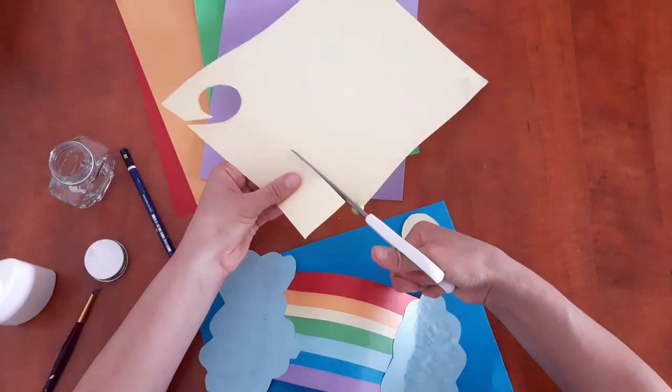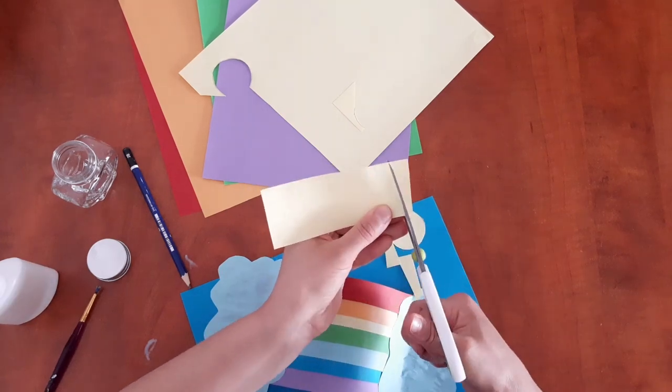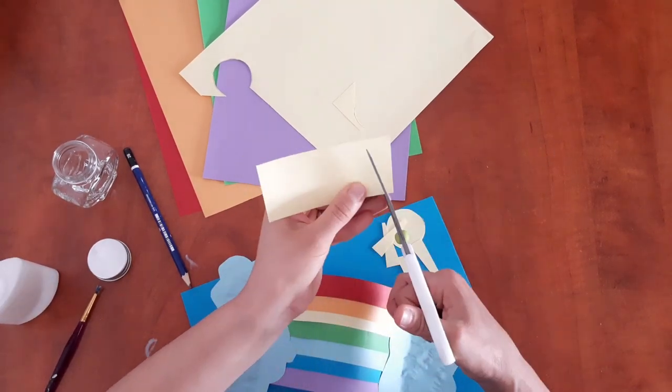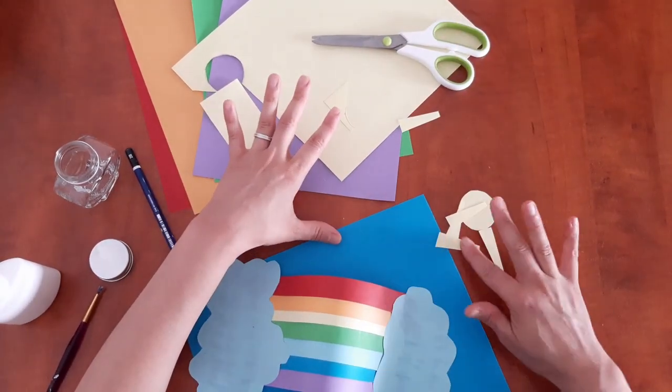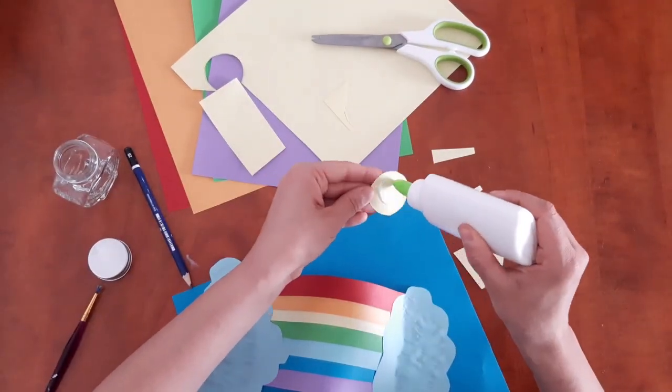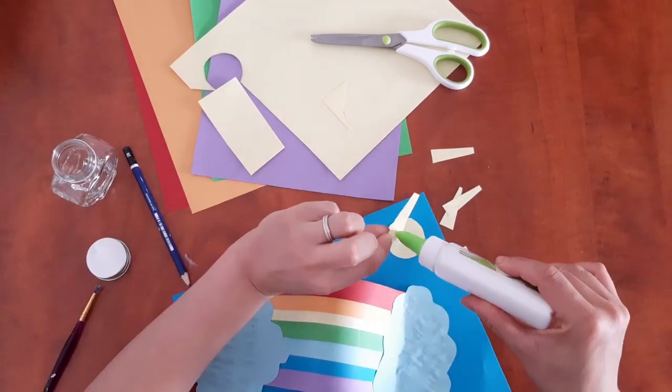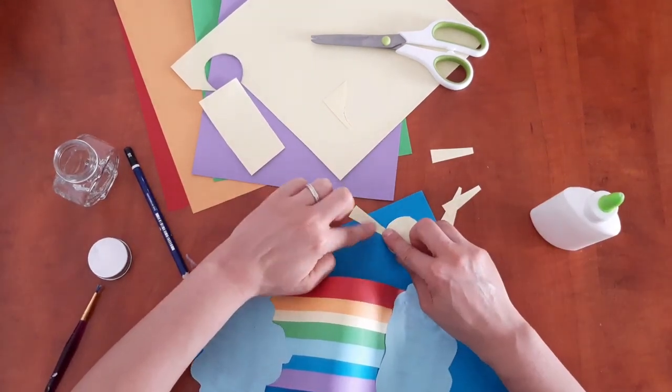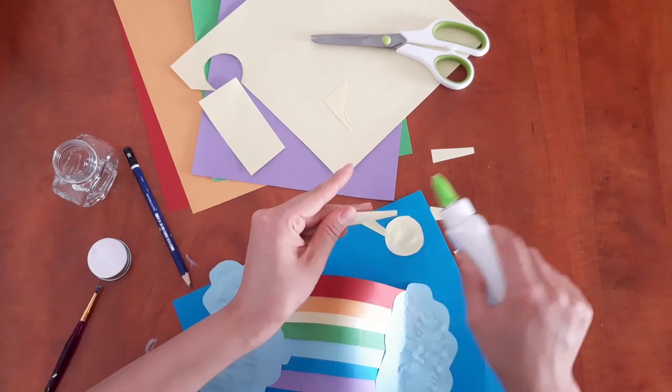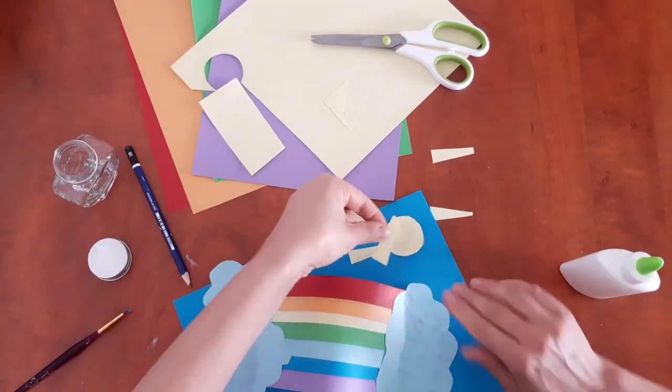I'm going to cut four, five centimeter strips of paper. I'm cutting small sun rays. I'm going to glue the sun on the top of my paper and the rays. And if you will need some more rays, you can cut a few more.